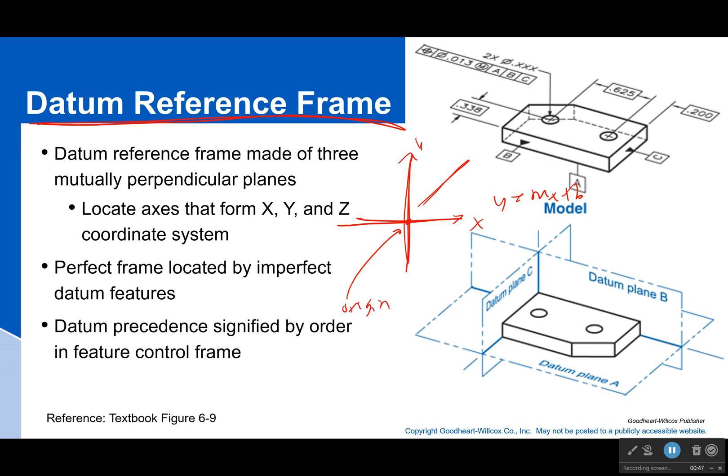So what you are effectively doing when you create a datum plane is you are saying, okay, that's where the y-axis is, that's where the x-axis is. And using all of them together, you'll say, well, that's where the origin is. That's the zero. That's where everything is measured from.